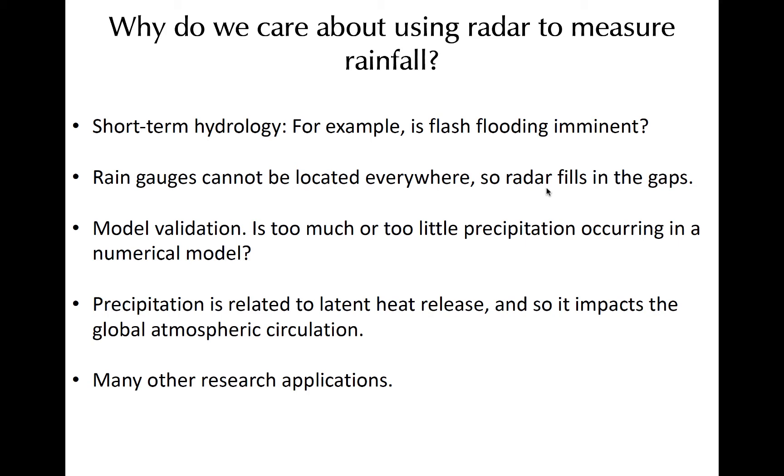For example, because precipitation is related to latent heat release in the atmosphere, the amount of rainfall observed via remote sensing can provide some insight on the structure of the general atmospheric circulation.